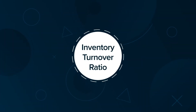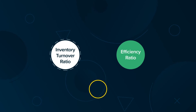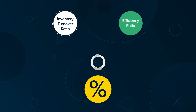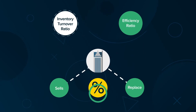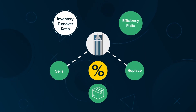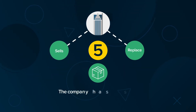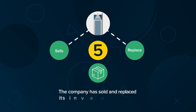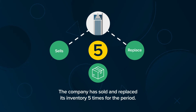Inventory turnover ratio is an efficiency ratio showing the rate at which a company sells and replaces its inventory in a given period. A ratio of 5 means the company has sold and replaced its inventory 5 times for the period.